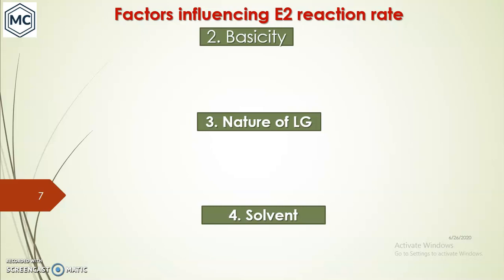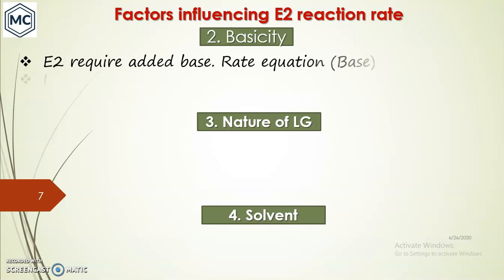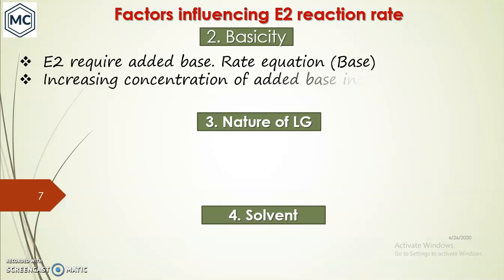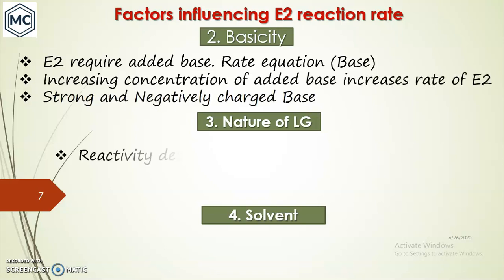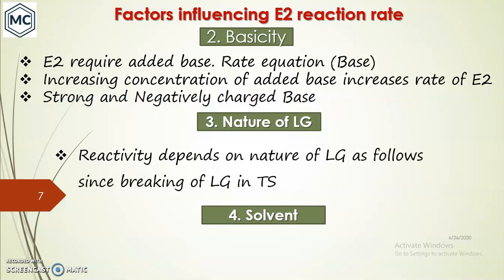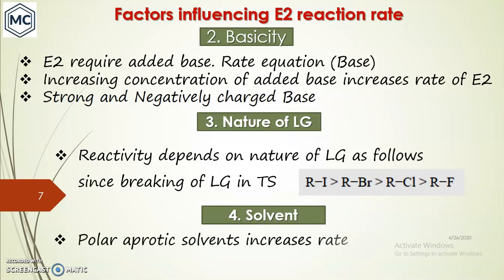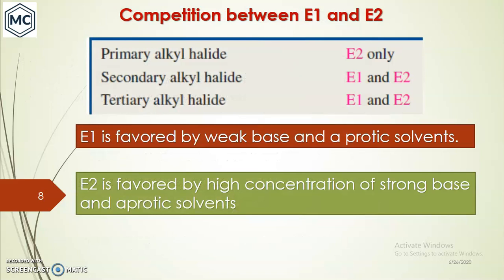Regarding basicity, in E2 reaction the rate depends on both the concentration of substrate and base, so E2 requires an added base. Increasing the concentration of added base increases the reaction rate, and a strong, negatively charged base always increases the reaction rate. Regarding leaving group, since breaking of the leaving group bond occurs in the transition state, the reactivity order is the same: I > Br > Cl > F. For solvent, like in SN2, a polar aprotic solvent increases the reaction rate.